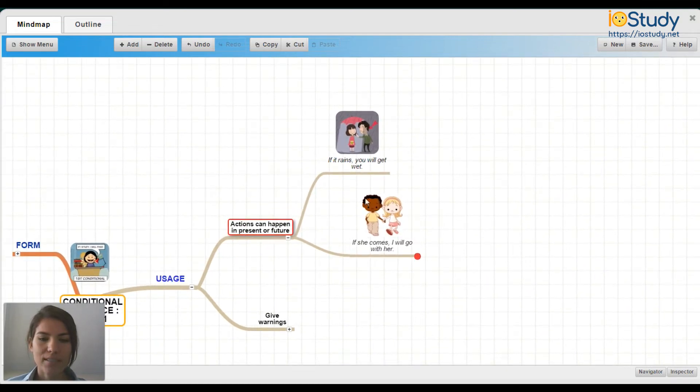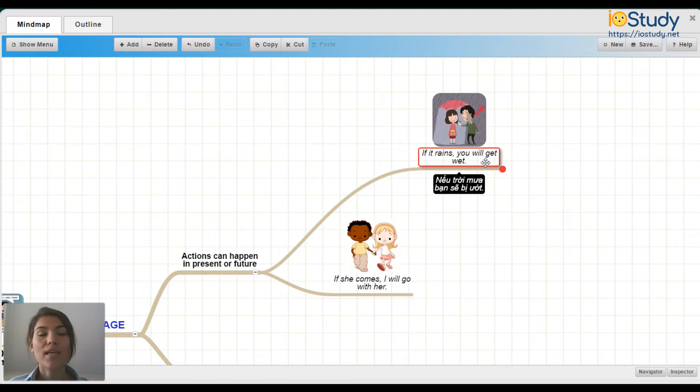So here is an example. First one, if it rains, you will get wet. So if it rains in the present, you will get wet in the future. This is talking about what will happen as a consequence of something else.